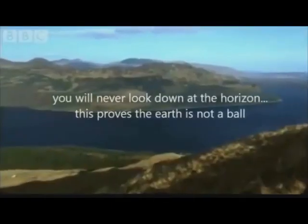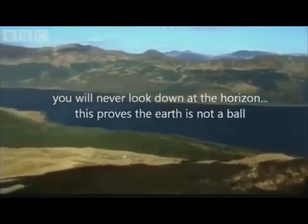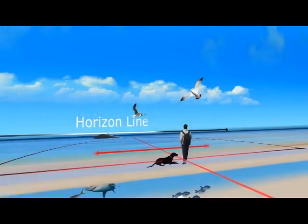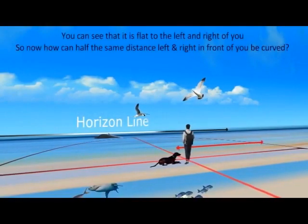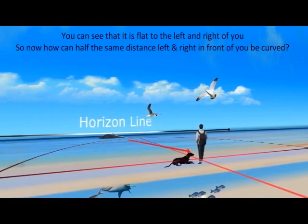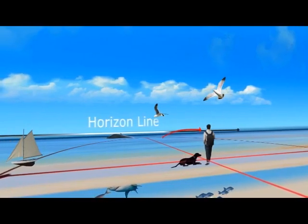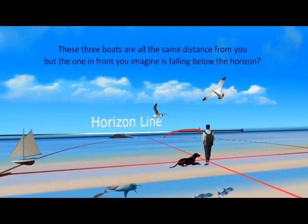In fact, the earth immediately beneath balloon, airplane, rocket, or capsule presents a dish-shaped or concave-like appearance, the point of earth immediately below the vehicle appearing the lowest. It is not the highest point of your globe earth, with the dip or curvature of the ball sweeping away downward to a horizon far away below the eye level.